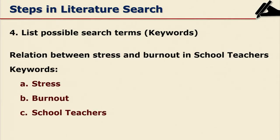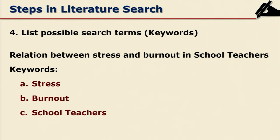Next, list possible search terms or keywords of the related topics. For example, if your topic is the relationship between stress and burnout of school teachers, picking up keywords like stress, burnout, and school teachers will help. Similarly, you can also search under the term 'tension.' Think of possible search terms and accordingly go to the databases and library catalogues, which will give you the best literature on your topic.